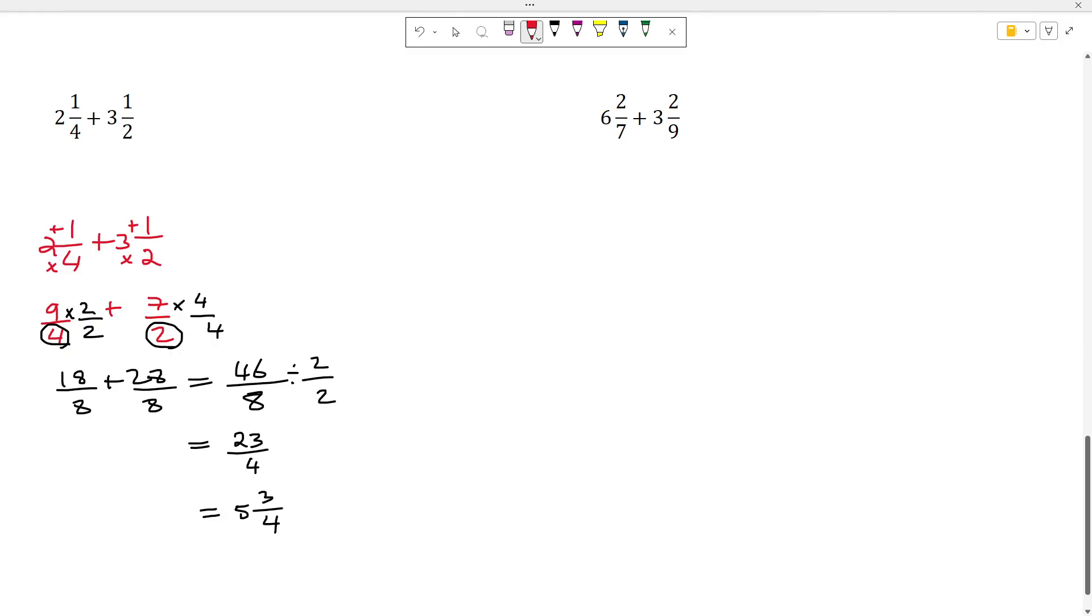Now in the next question I'm going to solve it using the LCM method. Again let's convert it into an improper fraction. So we have 6 and 2/7 plus 3 and 2/9. We're going to take 7 times 6 is 42, 42 plus 2 is going to give us 44/7 plus. 9 times 3 is 27, 27 plus 2 is going to give us 29/9.